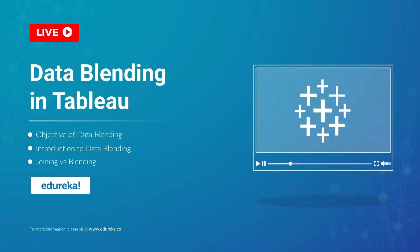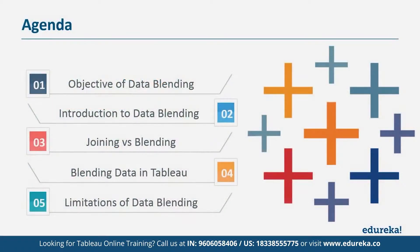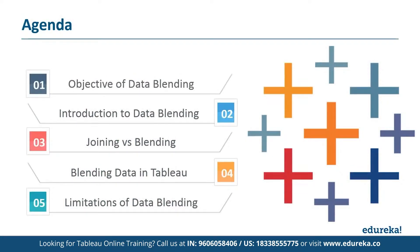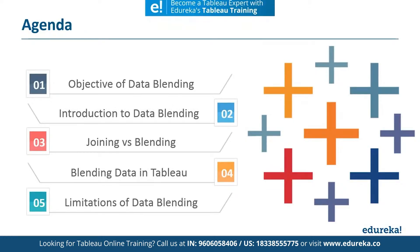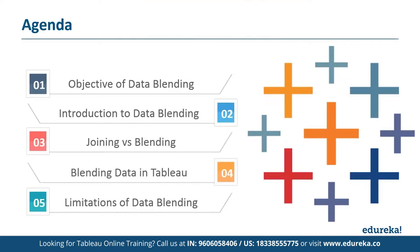Let's discuss our agenda for today. First, we're going to talk about the objective of data blending. Then we're going to talk about what data blending essentially is and how it works in Tableau. Then we're going to discuss a concept called joining and see how it is different from data blending. Then we're going to see a short demo with a few simple steps. And finally, we're going to discuss a few limitations in this process.